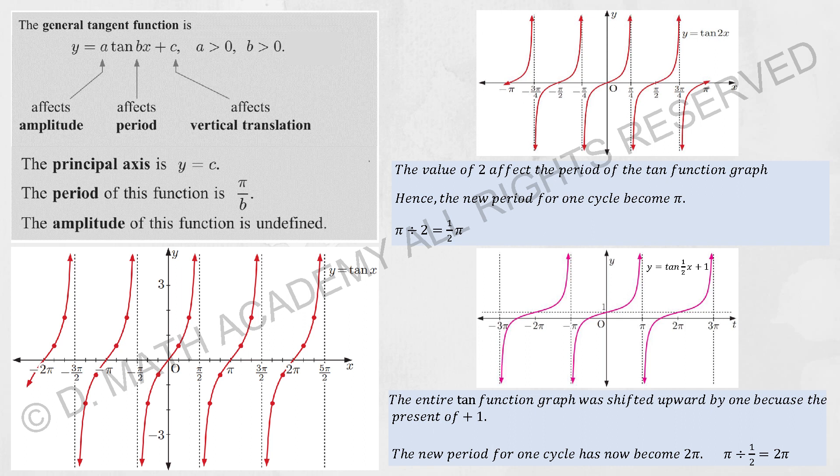And then, since there's 1 plus 1 over there, the vertical changes will now be shifted upwards. This will be how it looks like after that. That will be for sine cosine tangent graph. I hope you have a better understanding after watching this video.